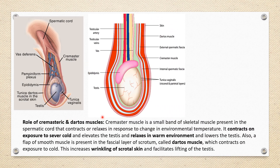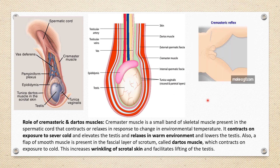The third explanation is the role of the cremaster muscle, a small band of skeletal muscle present in the spermatic cord. It contracts or relaxes in response to changes in environmental temperature. On exposure to severe cold, it contracts and elevates the testis so it comes closer to the abdominal cavity. When the environment is warm, it relaxes and lowers the testis. Thus, contraction of the cremaster muscle is responsible for the maintenance of low scrotal temperature.